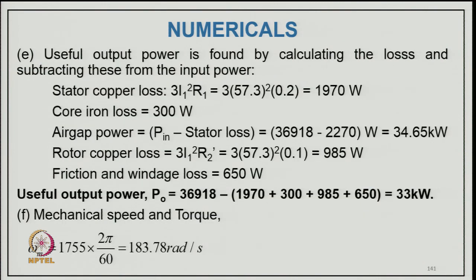Continuing Example 4: Stator copper loss = 3×I1²×R1; core loss = 300 W; air gap power = Pin − stator losses = 34.65 kW; rotor copper loss = 3×I2²×R2' = 865 W; mechanical power developed = air gap power − rotor copper loss; friction and windage loss = 650 W; useful output power Po ≈ 33 kW. Efficiency η = Po/Pin.